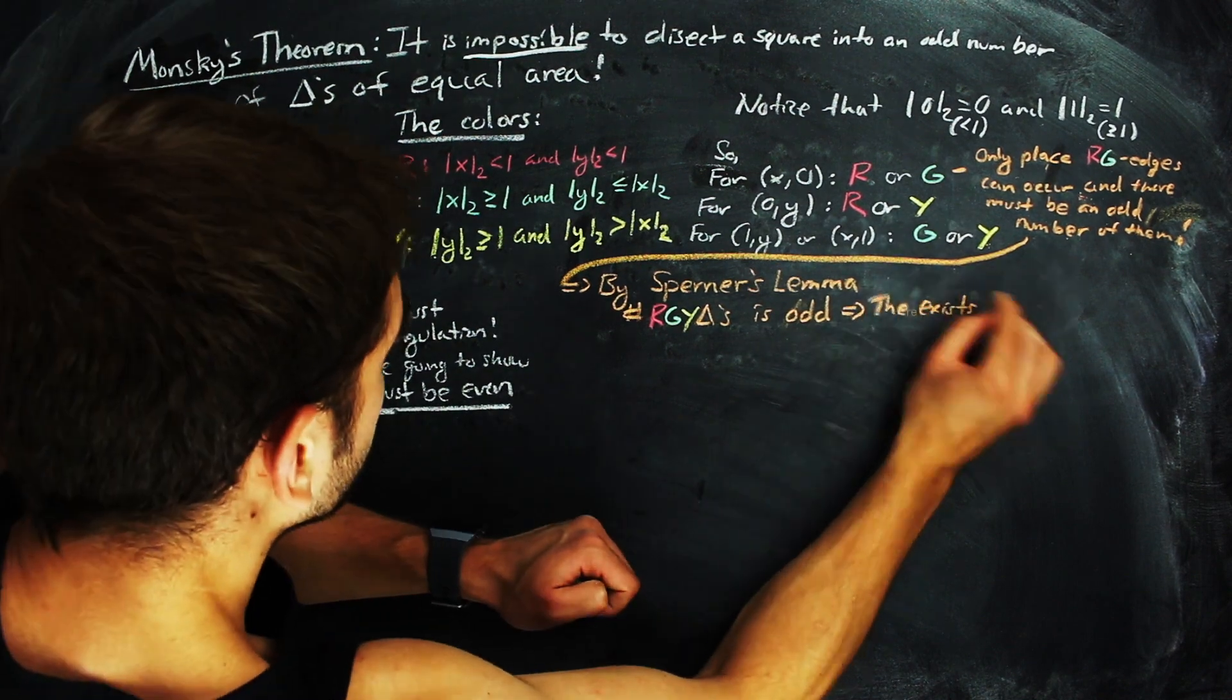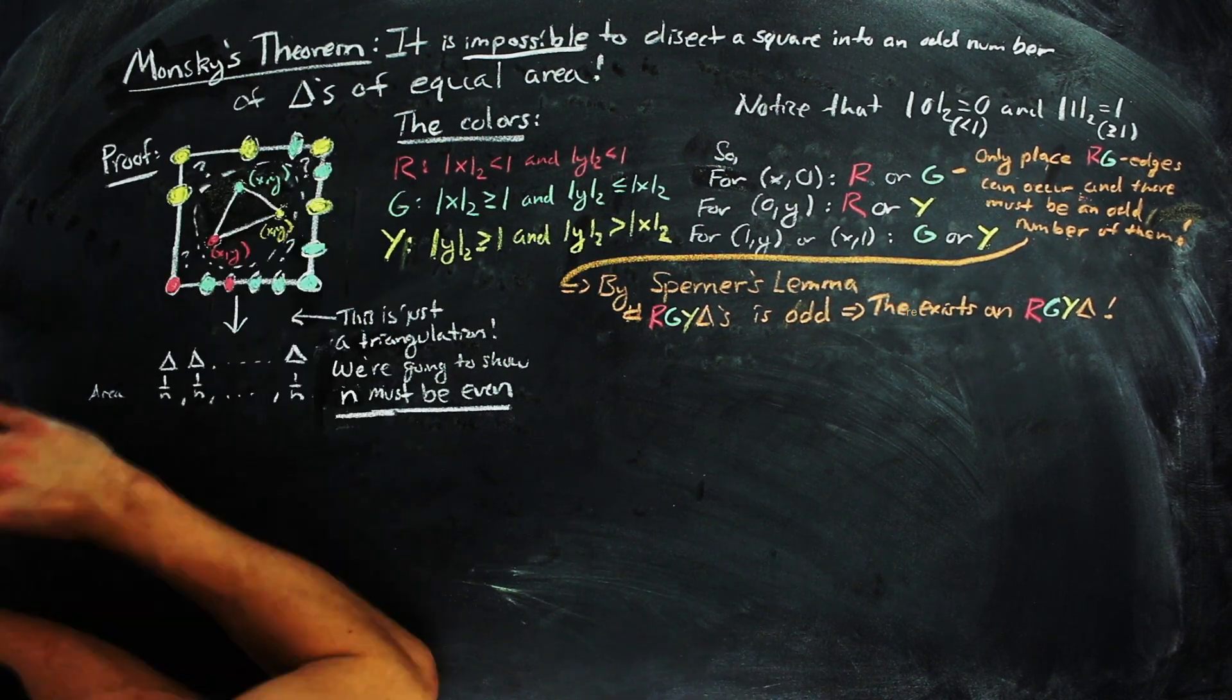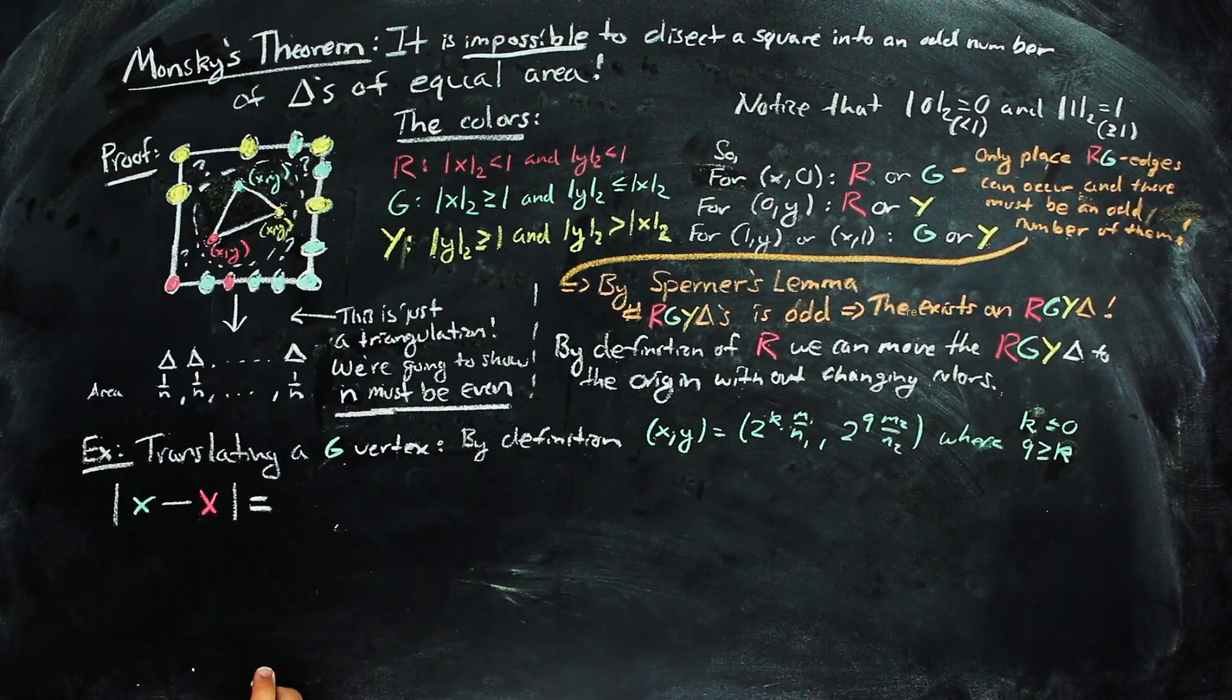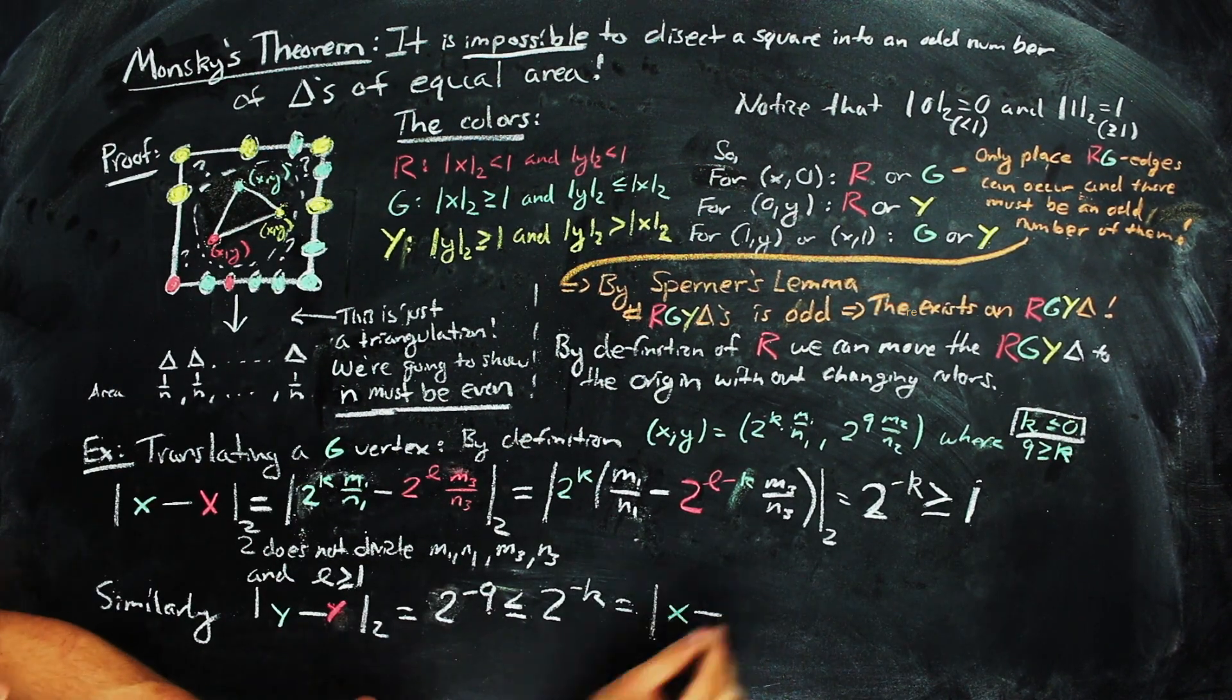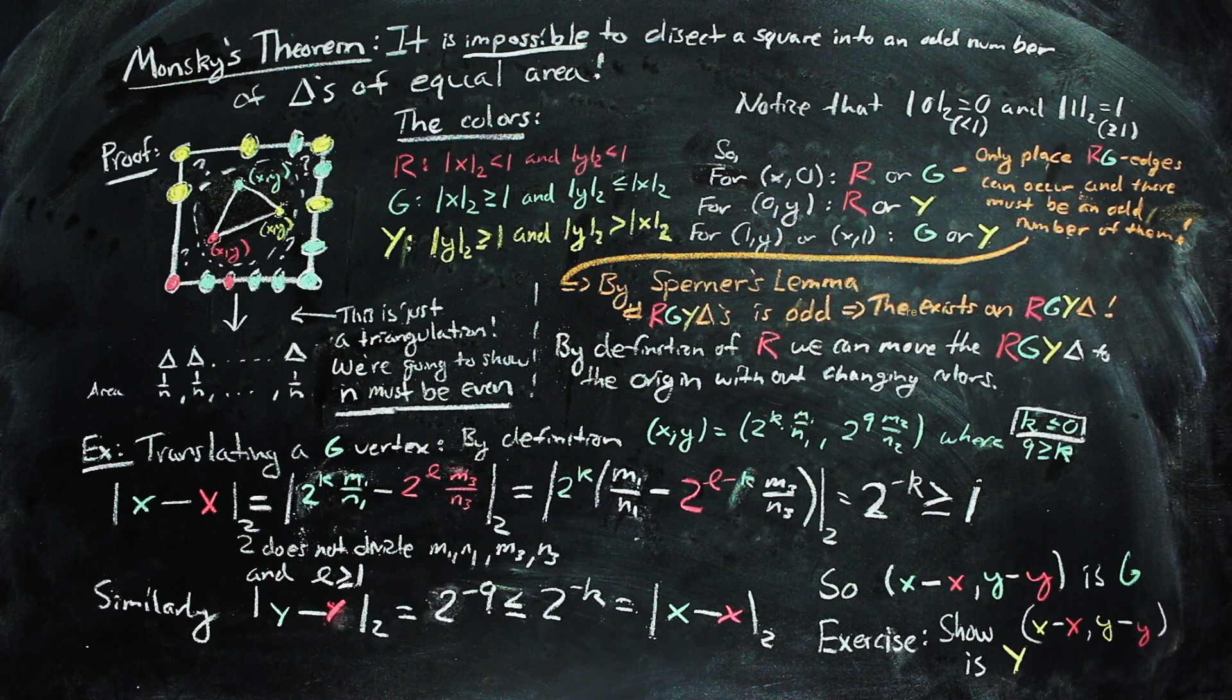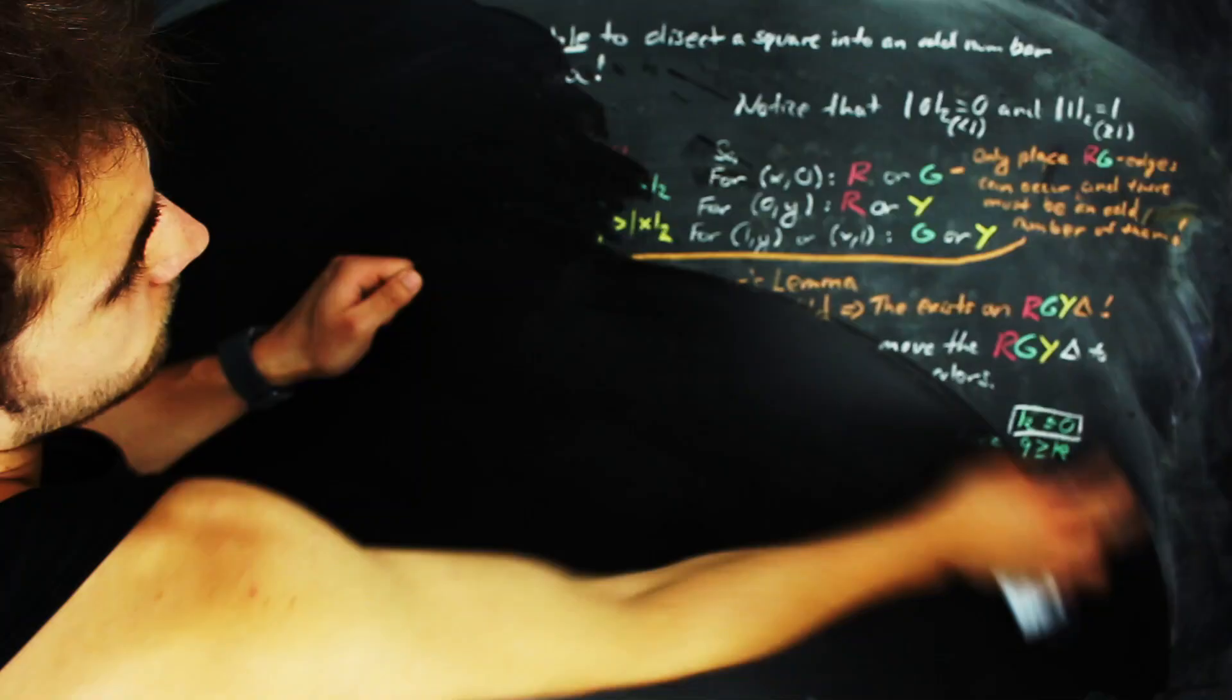Moving on, that means that there exists at least one three-colored triangle. Wherever one of them may be, we translate the entire diagram so that the red vertex in the triangle is at the origin. Since a red vertex has coordinates with norms less than one, and the yellow and green coordinates have at least one coordinate with norms greater than one, the translation does not change the coloring of the diagram. Here, I've provided the calculation that shows the green vertex will still be green after translation. I'll leave the translation of the yellow vertex up to you as an exercise. So if you want to take a second and think about that, the argument is very similar.